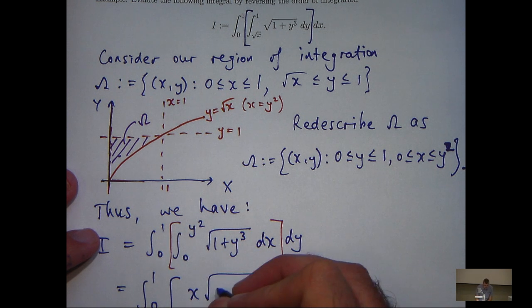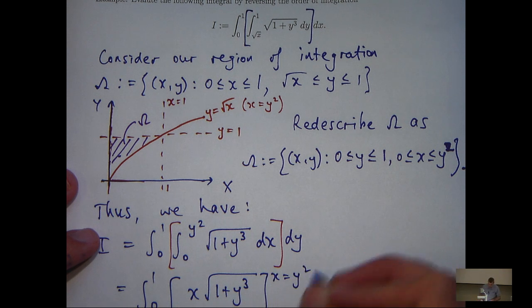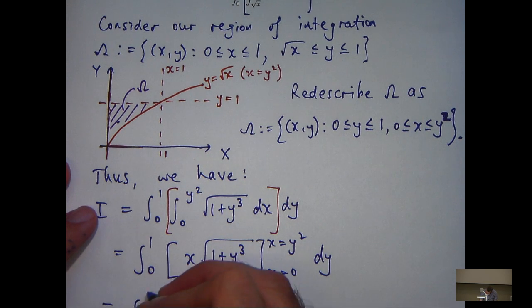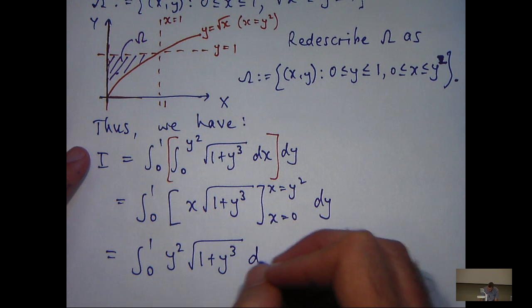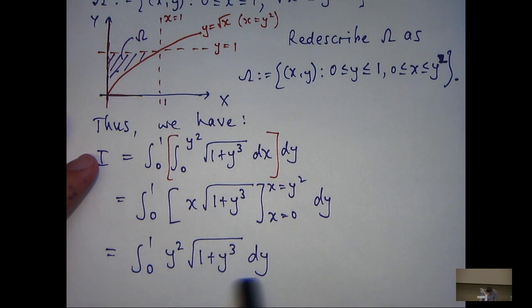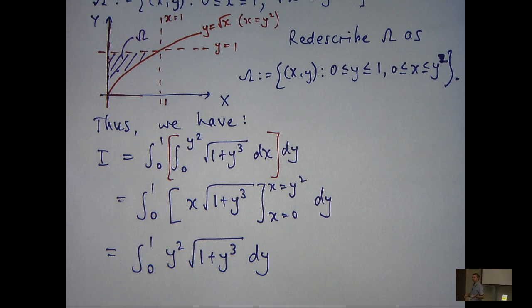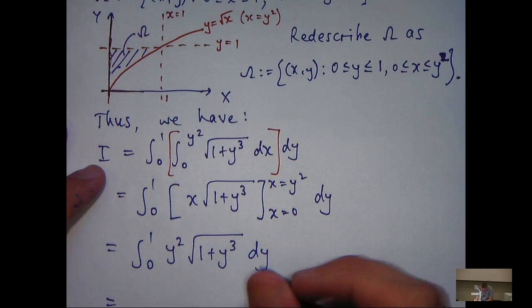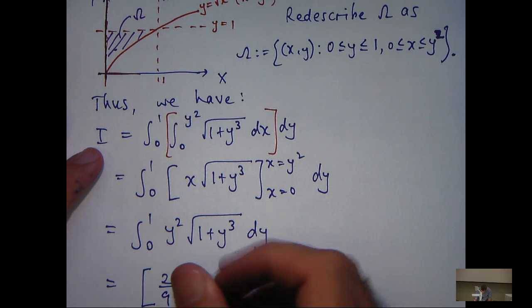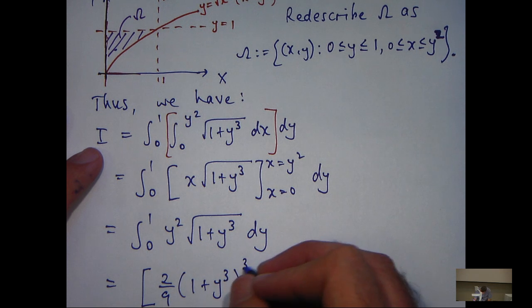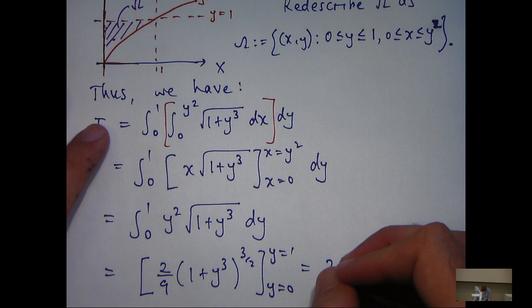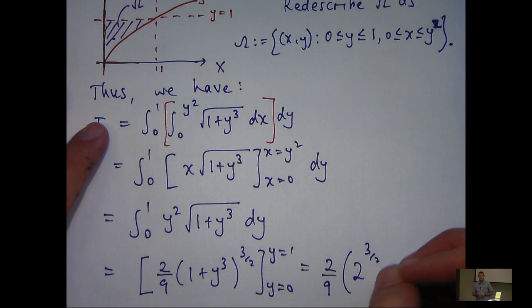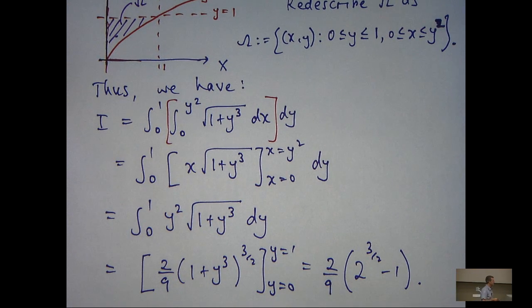We have now, you can see, reversed the order of integration. Our upper and lower limits have changed. So, is this easier than this? Well, yes, because it's very easy to integrate this function with respect to x. So, let's do that. So, I'm going to get something like this. So, if I substitute in, in a normal way, I'll get a single integral now. So, now I can evaluate this one of two ways. I can do it by inspection, or I can use the substitution, say, u equals 1 plus y cubed. Well, I'm going to do it by inspection, and I'll get the following. And if I just substitute in, in the usual way, I'll come up with the following answer.